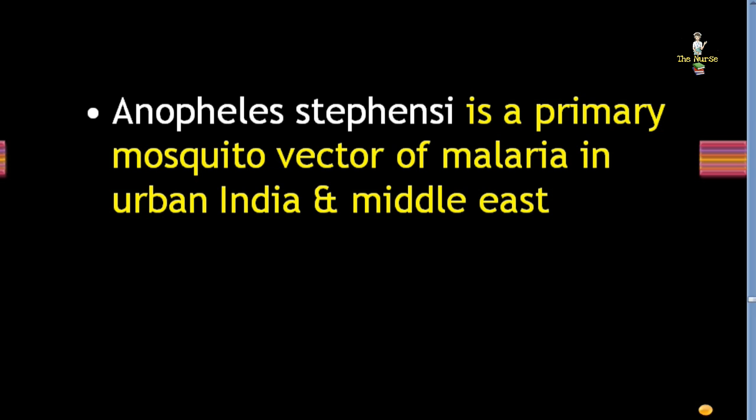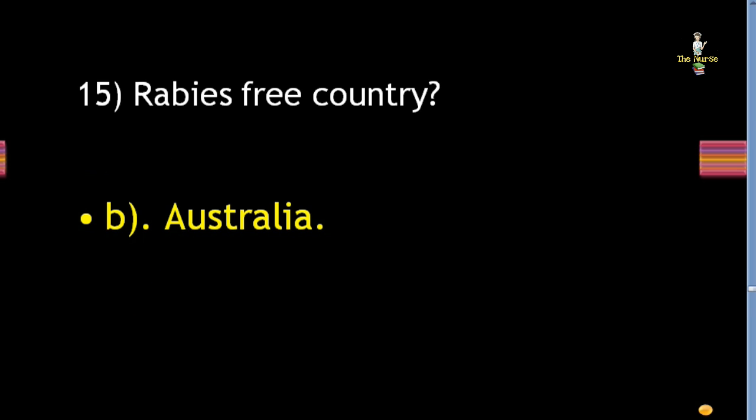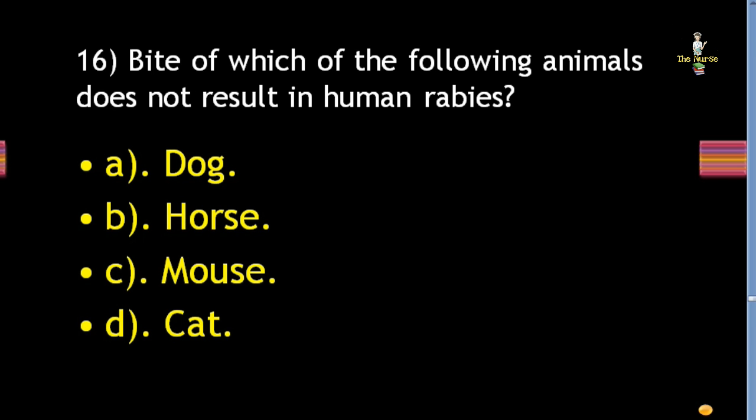Next question: which is a rabies-free country — China, Australia, Russia, or France? Correct answer is Australia. Next question: bite of which of the following animals does not result in human rabies — horse, mouse, or cat? Correct answer is mouse.